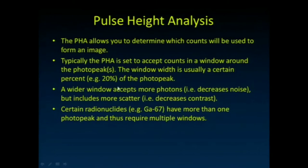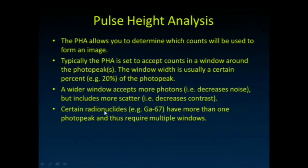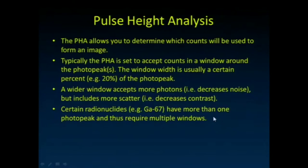A wider window would accept more photons and decrease noise, but scattered gamma rays — which have lower energy — would also be accepted, degrading image quality. Certain radionuclides like gallium-67 have more than one photo peak; they emit gamma rays of multiple different energies. For those, we set up multiple narrow acceptance windows centered right at each peak, rather than one wide window that accepts everything between them.